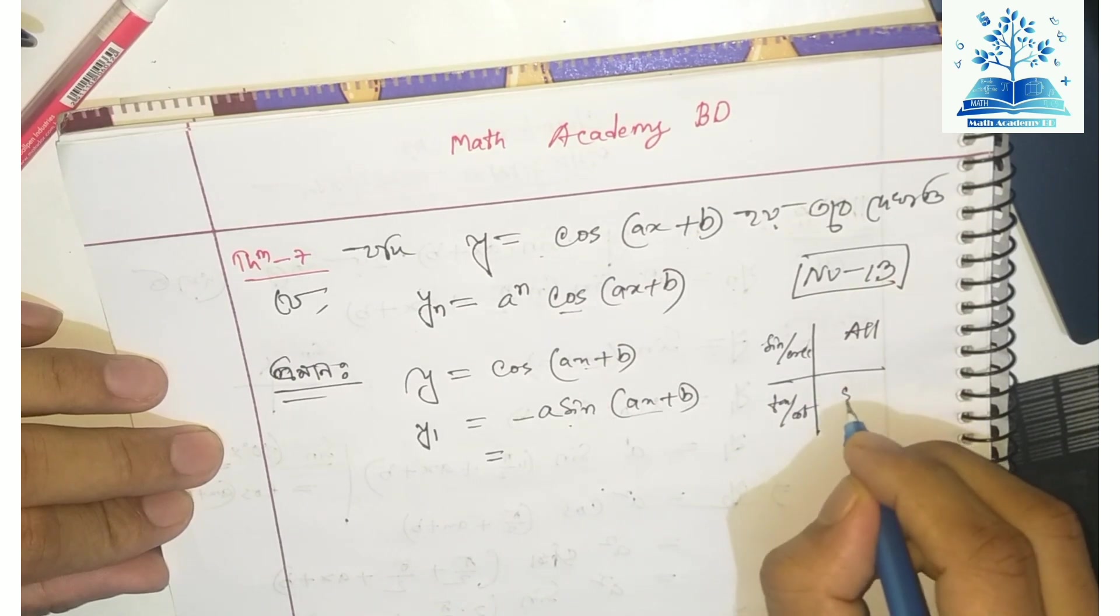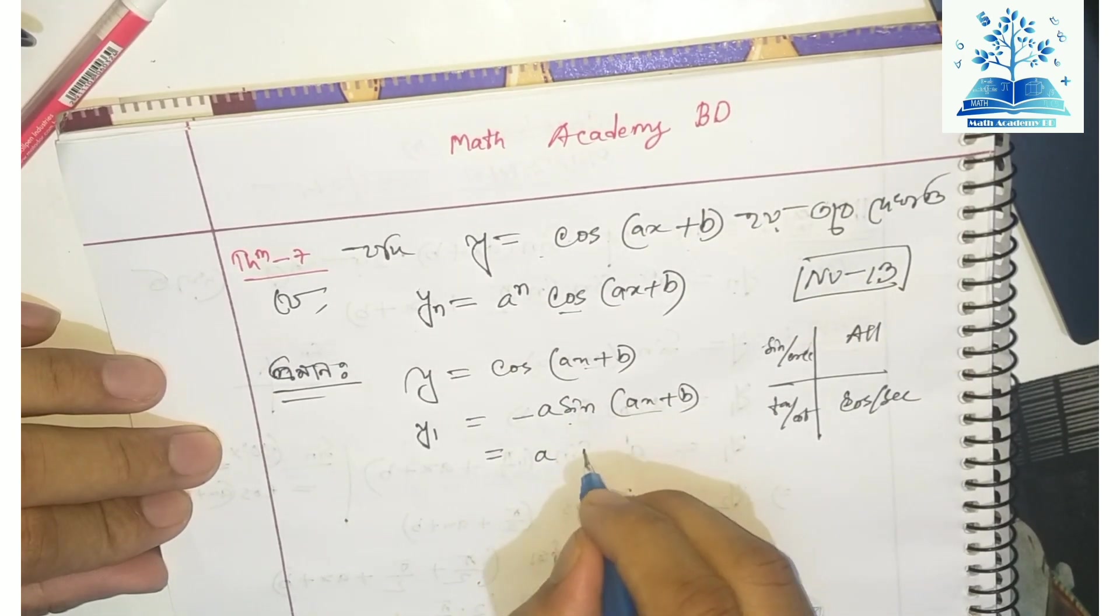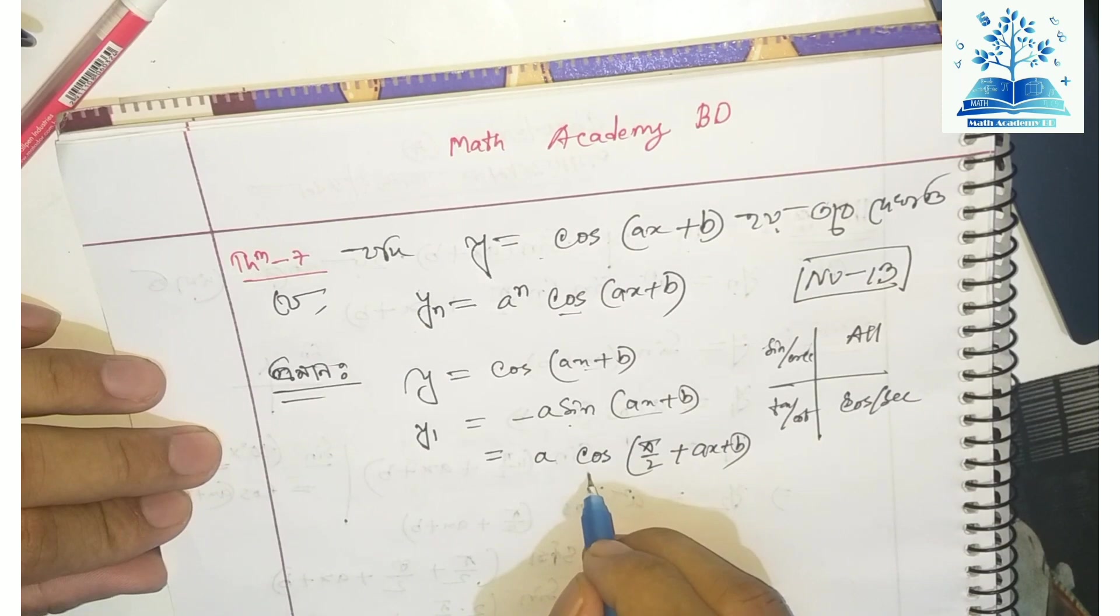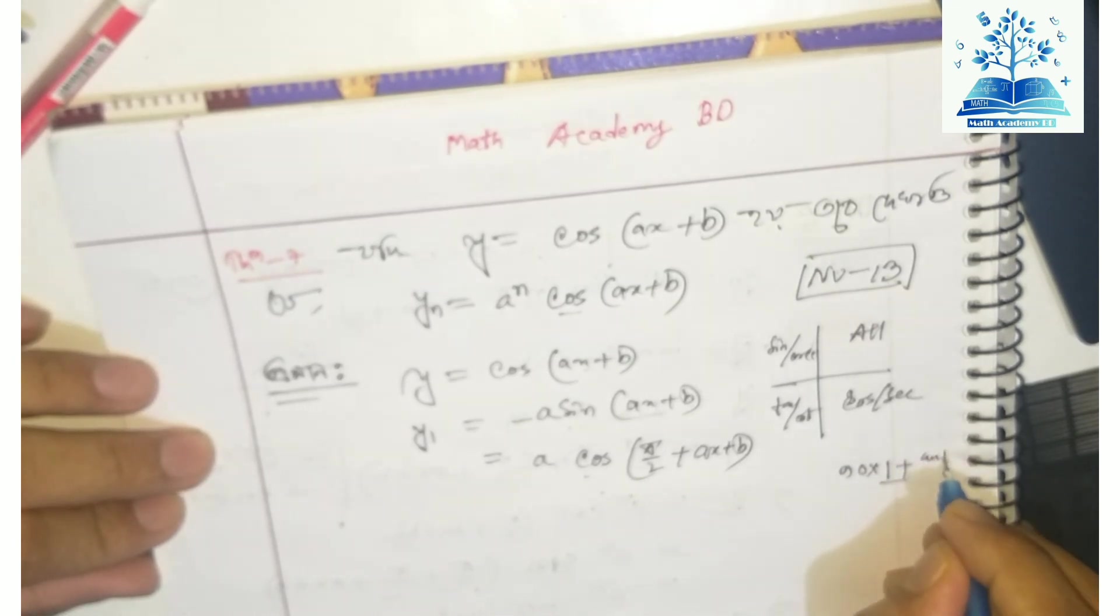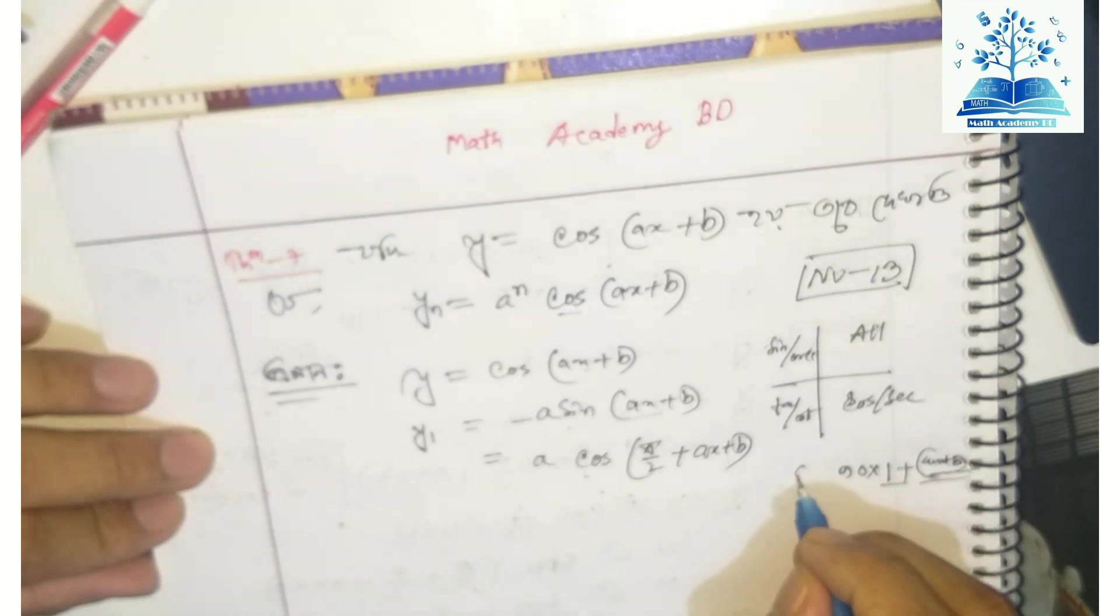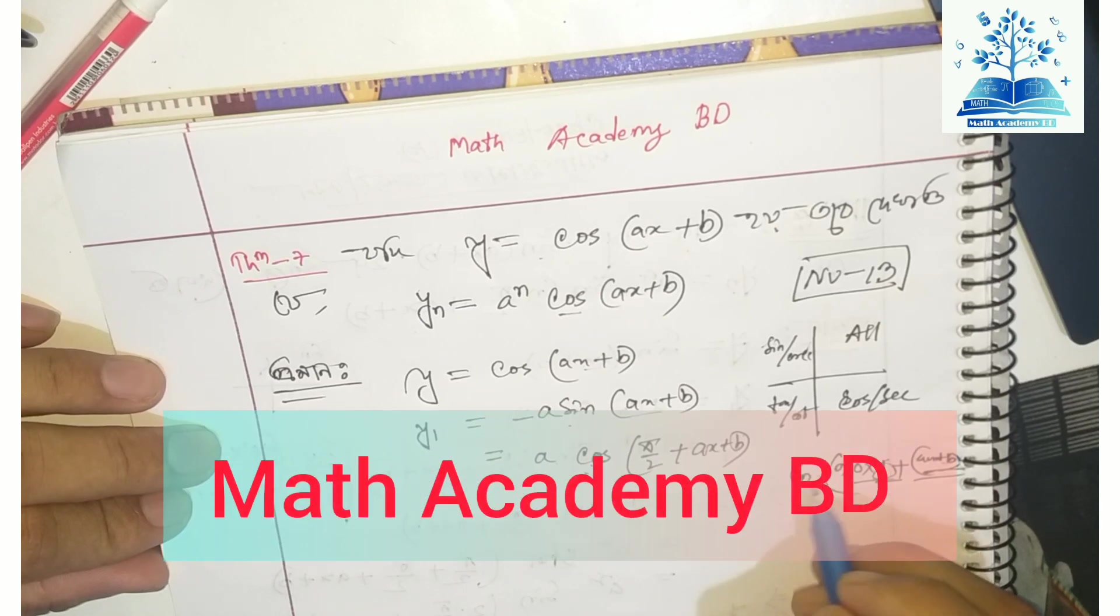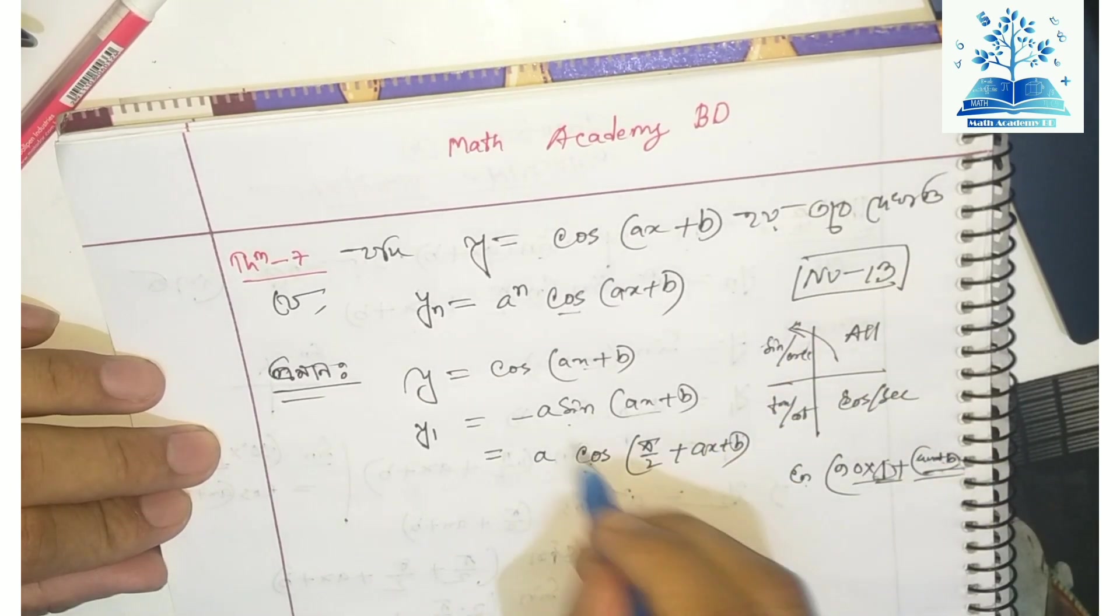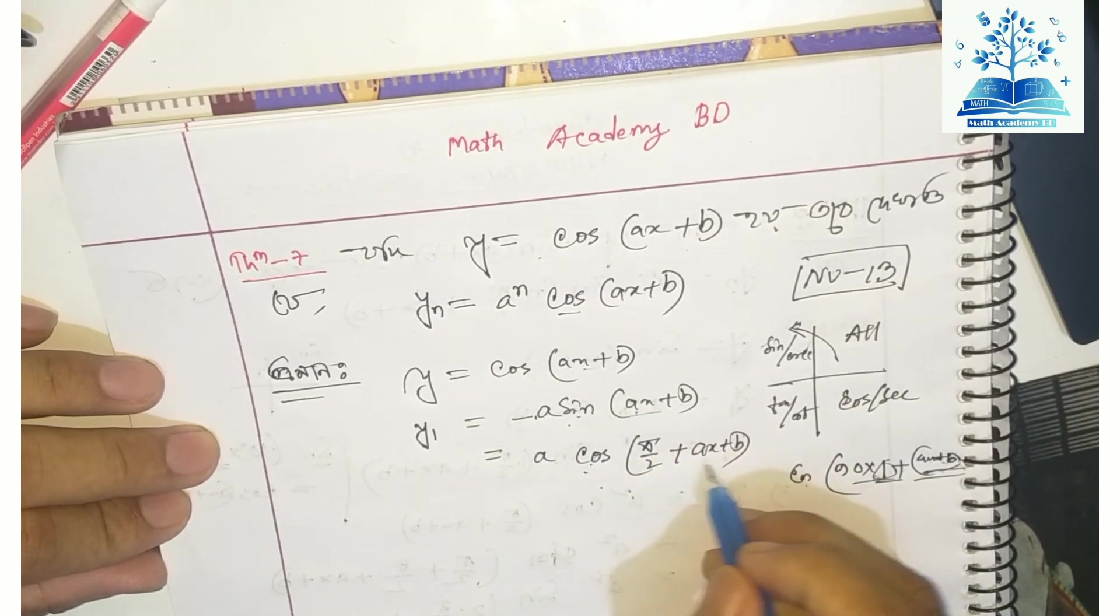We can write this with the chain rule. -sin becomes positive when we add π/2. So y₁ = a·cos(π/2 + x + b). When we convert -sin to cos, we add π/2.